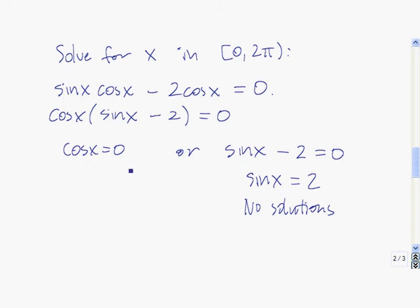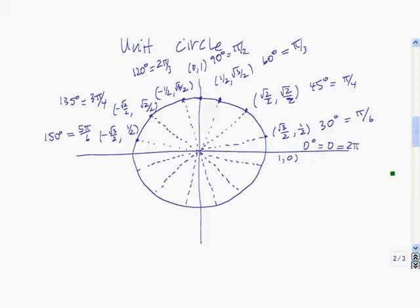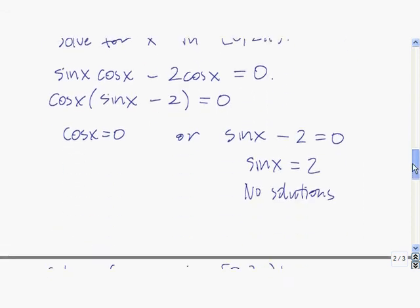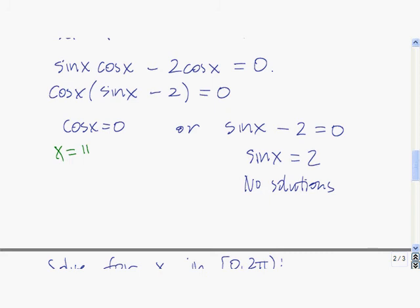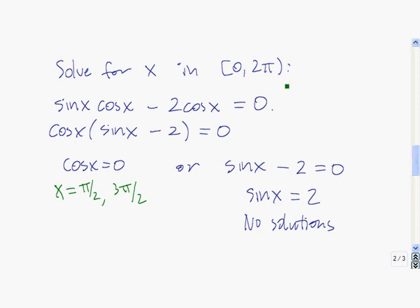Now let's look at where the cosine of x is equal to 0 — we're looking for where the x-coordinate on the unit circle is 0. The x-coordinate is 0 at this angle here and at this angle down here. This angle is pi over 2 radians; this angle down here is 3 pi over 2 radians. So the solutions to this original equation, restricting our interval to 0 to 2 pi, are x equals pi over 2 and x equals 3 pi over 2.